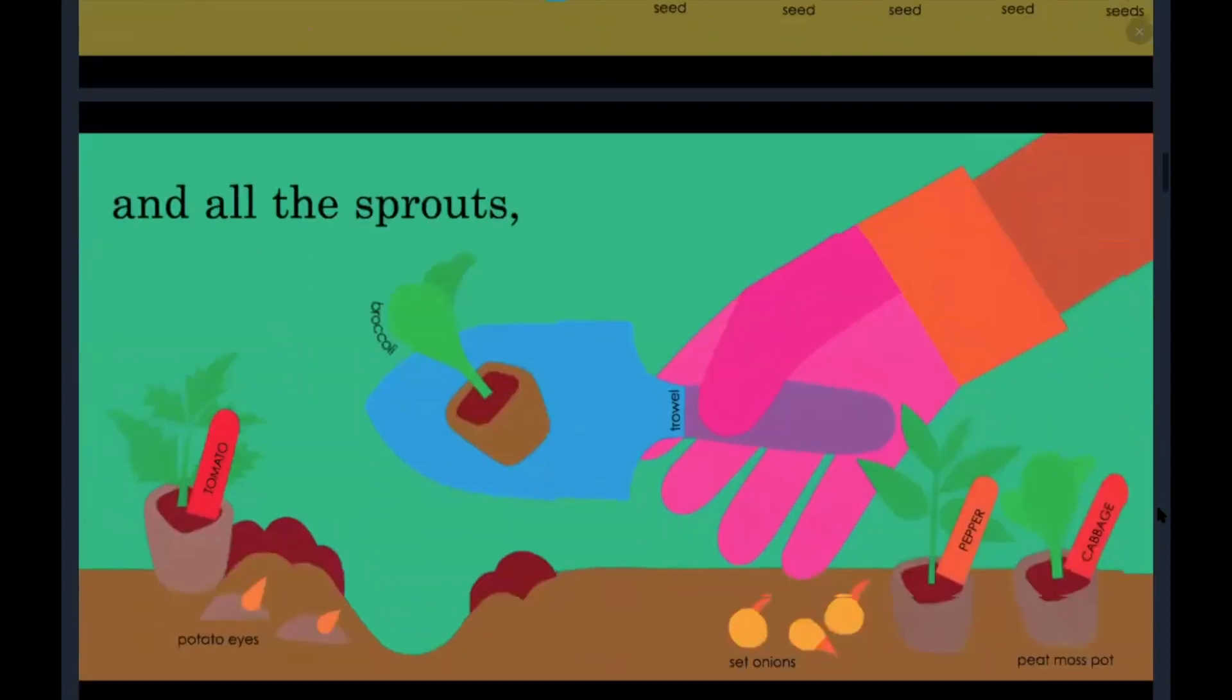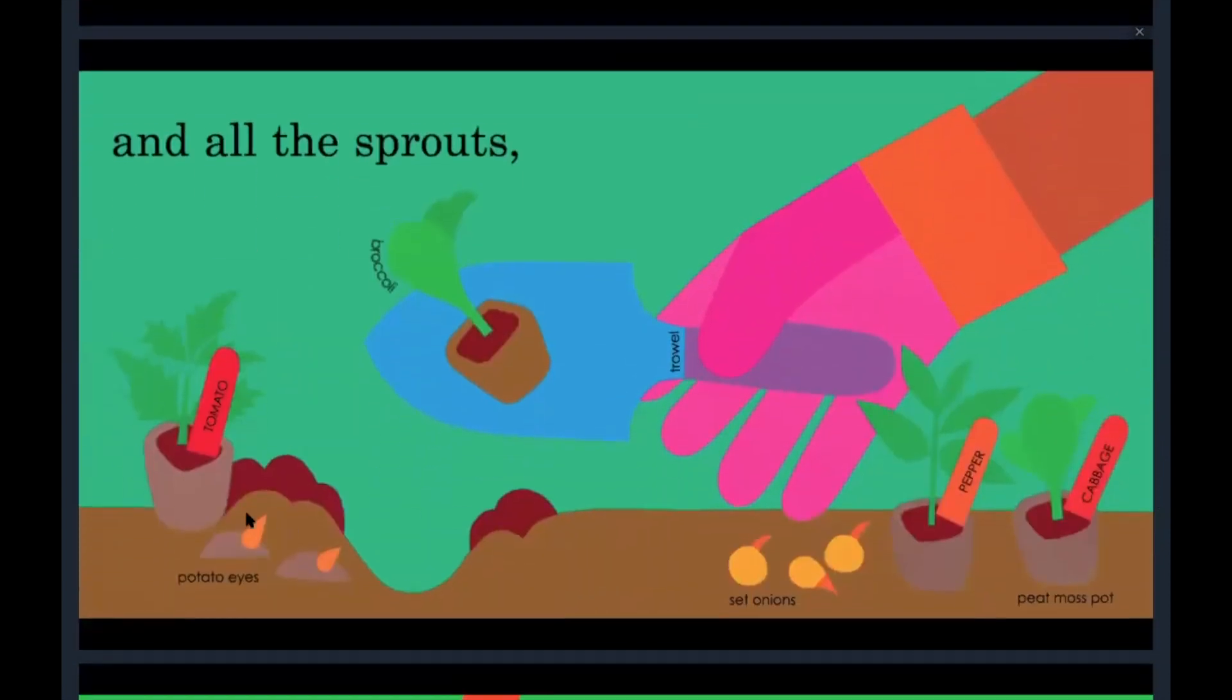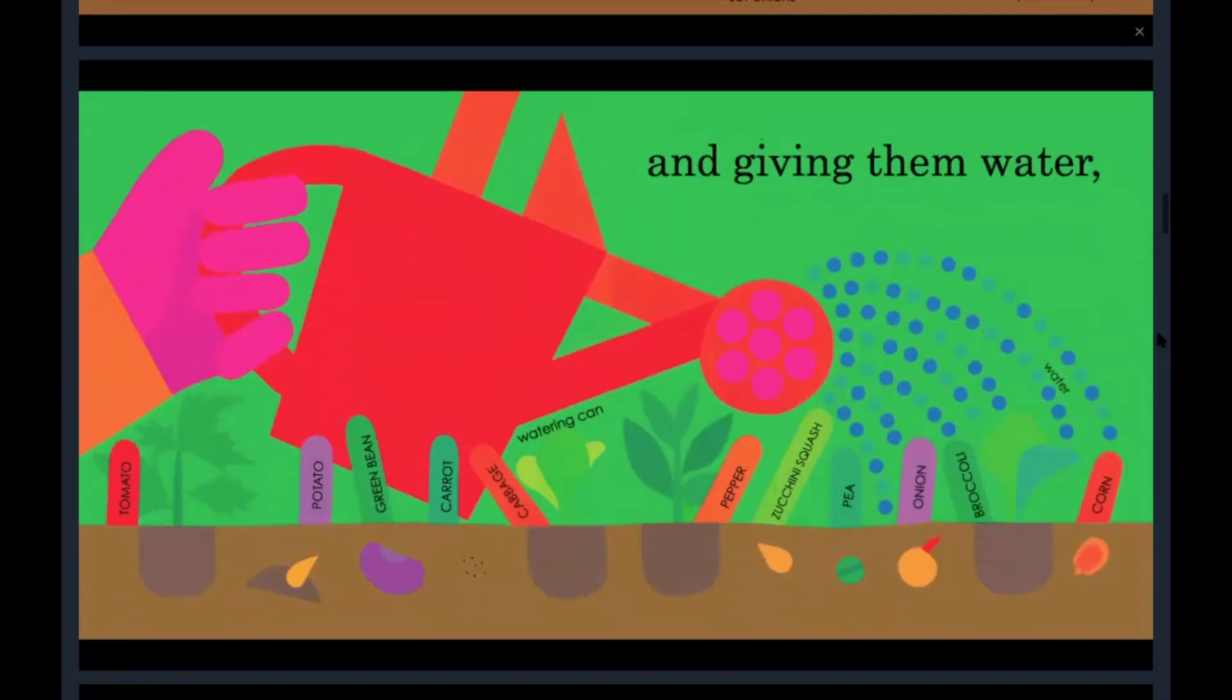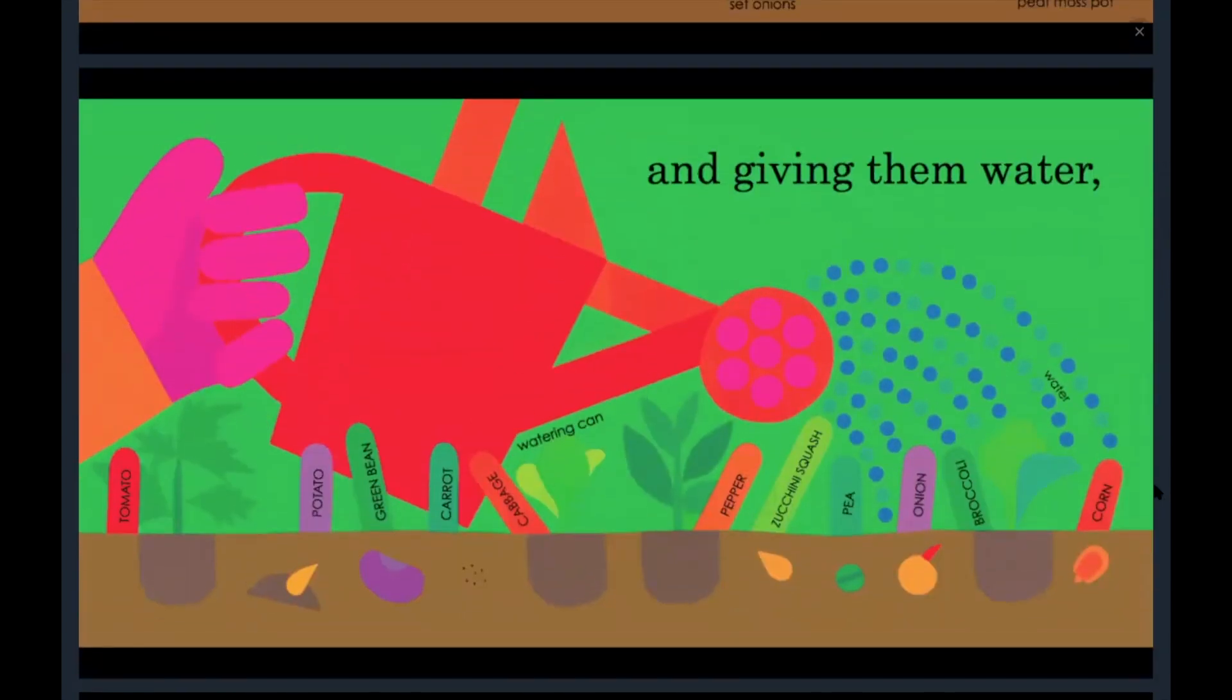And all the sprouts, there's a tomato, some broccoli like we planted in our last episode, some peppers and cabbage, and giving them water. So all these plants need water to grow.